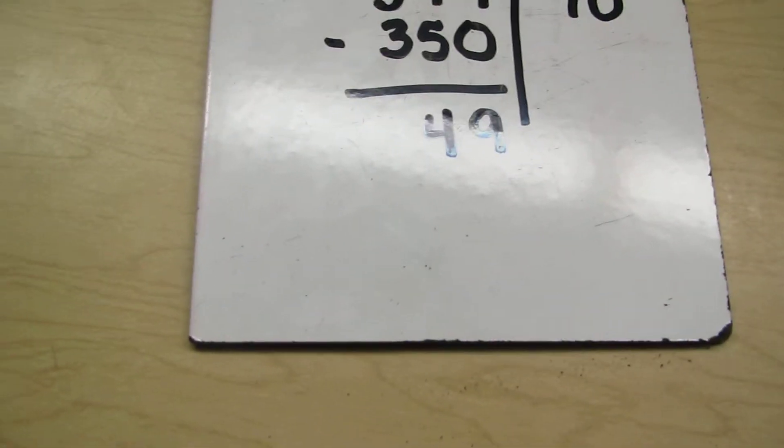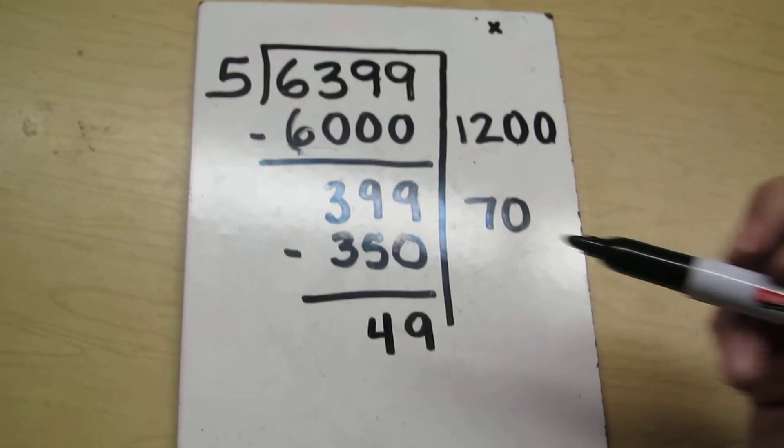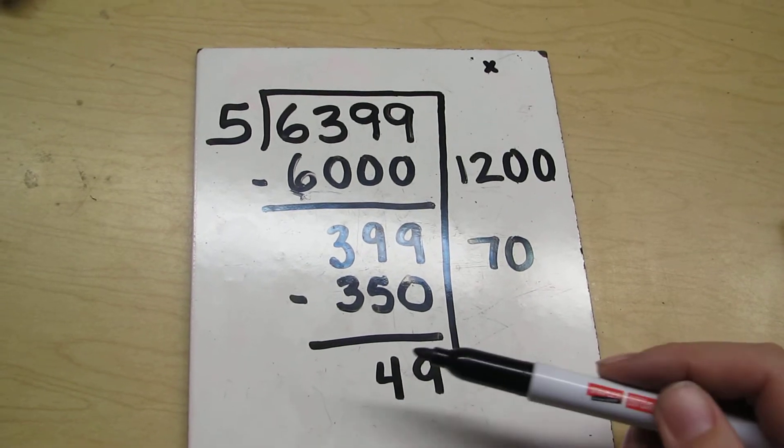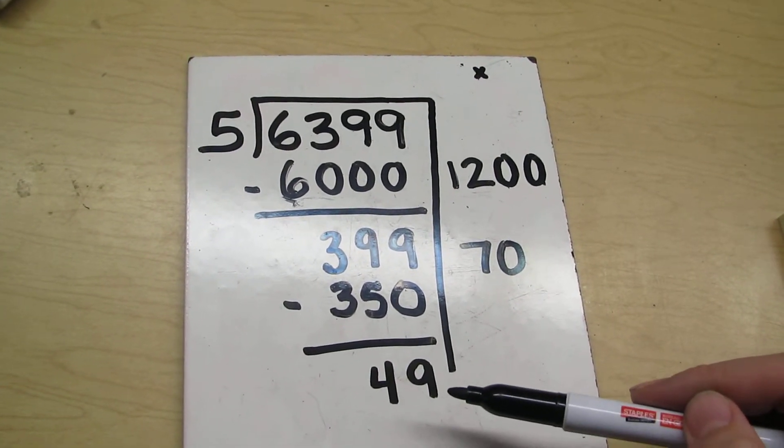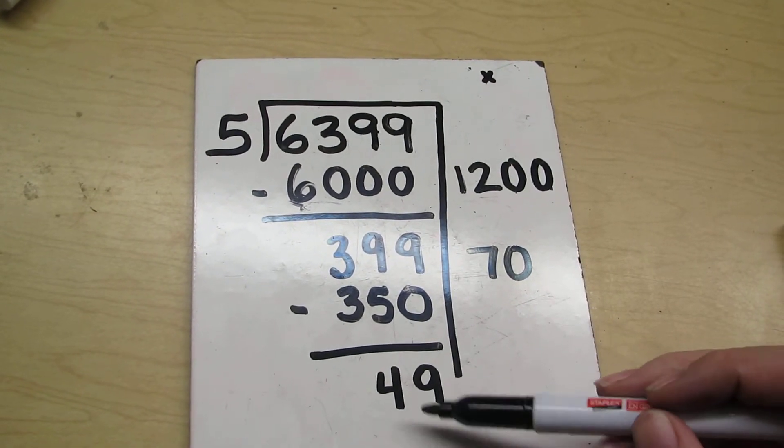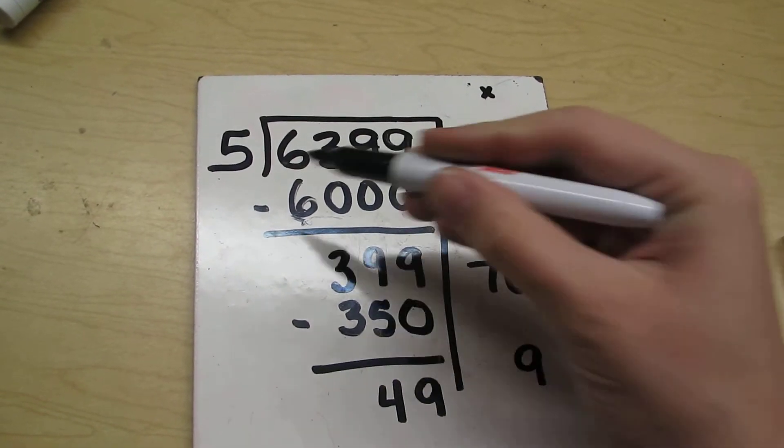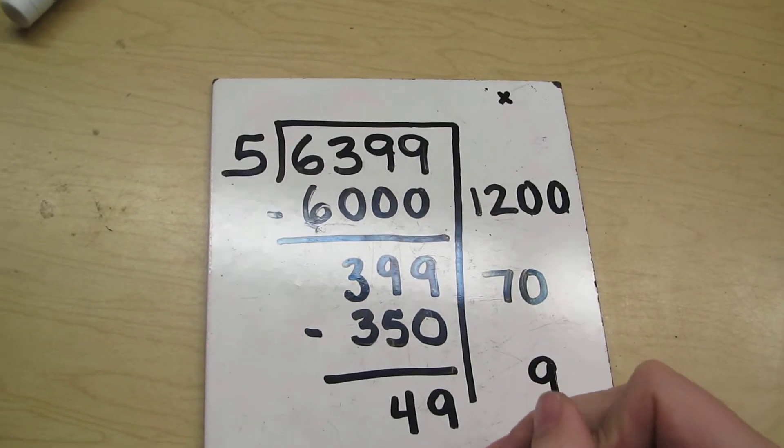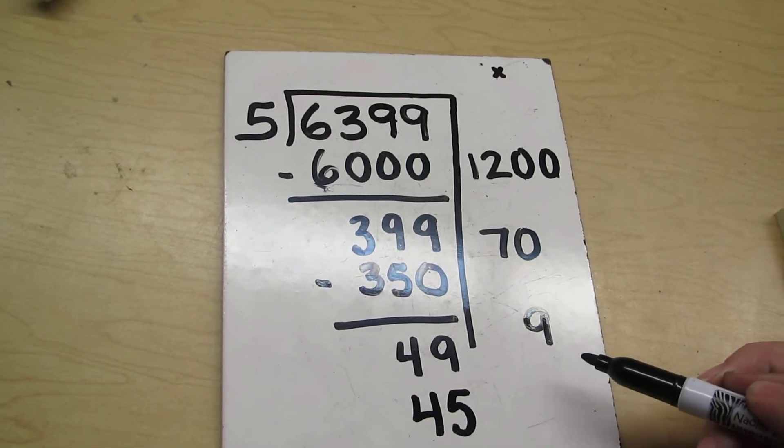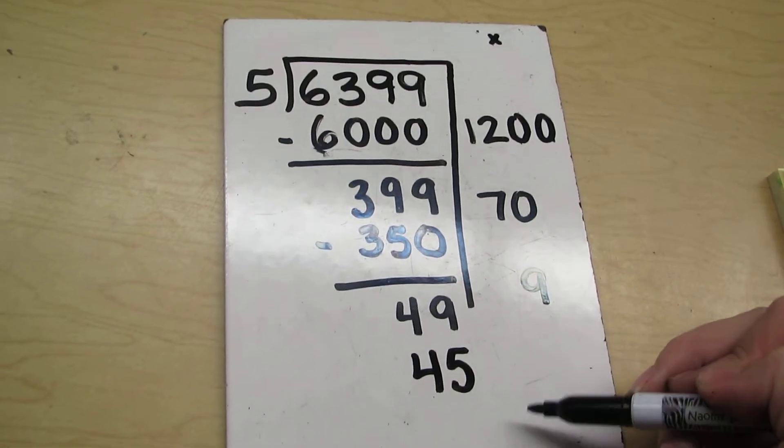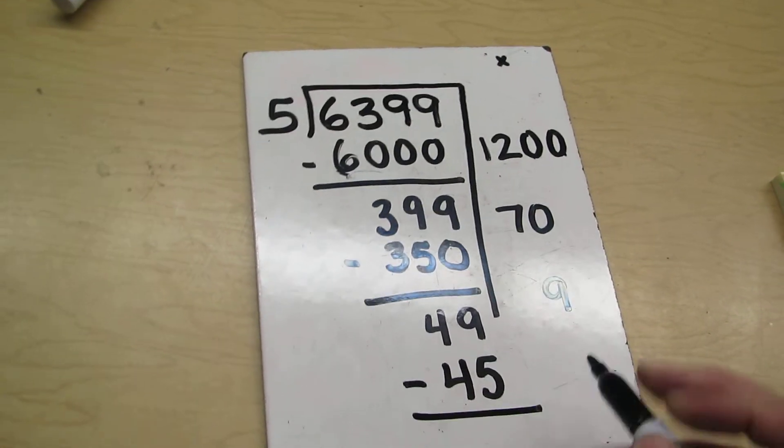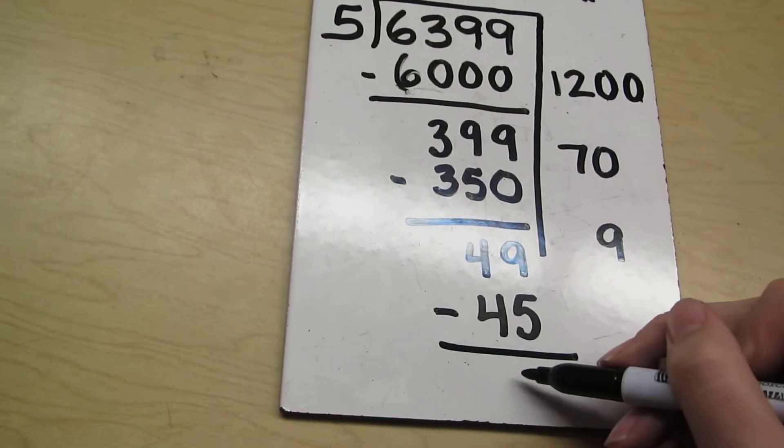Okay, so now I have 49. So I have to figure out something. 5 times something is close to 49. Well, like I said before, I know that 5 times 8 is 40. I can try something bigger than that I think. 5 times 9 maybe. Yeah, I think that will work. So 5 times 9 is 45. Remember, if you ended up picking 8 because you forgot that 5 times 9 is 45, that's not a problem. You just have an extra step at the end anyways. So 5 times 9 is 45. I do my subtraction. 49 minus 45 is 4.